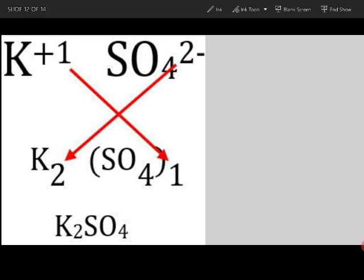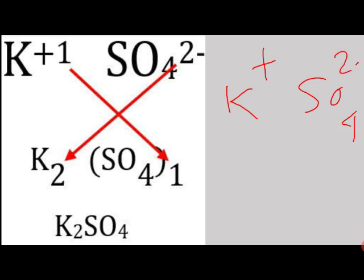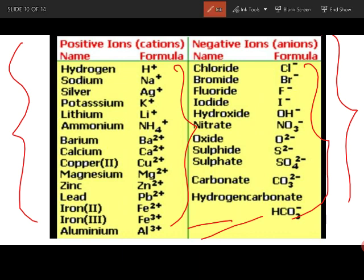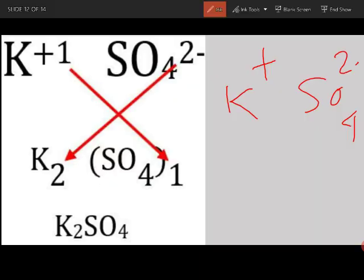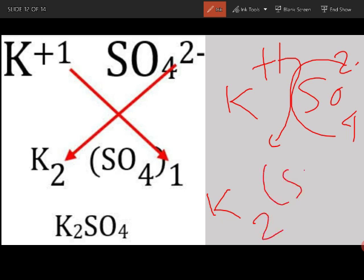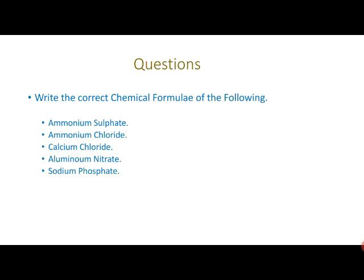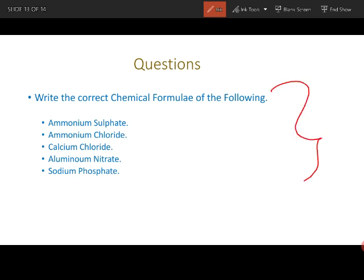Next example: potassium sulfate. Potassium has valency 1 (positive), and sulfate (SO₄) is 2 minus — you need to remember this from the valency table. Crisscrossing: the 2 comes down to potassium and the 1 comes down to sulfate, giving K₂SO₄.